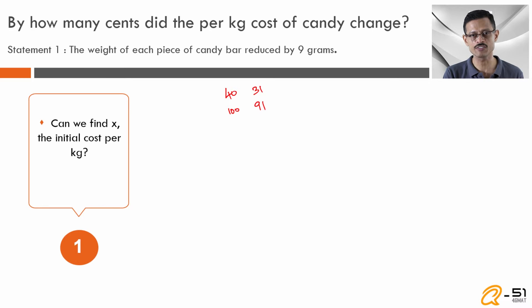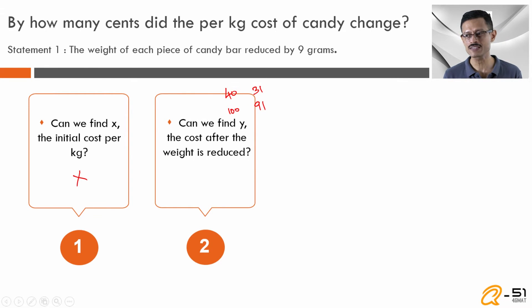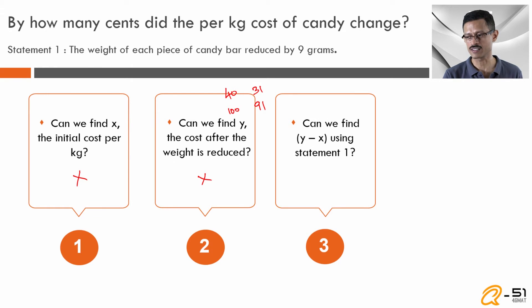But do we have the initial cost per kilogram of the candy, the x? No, that information is not available either in the question stem or through the statement. So we do not know x. Do we know the new price? We know that the weight of each candy has come down by 9 grams, but because we do not know the initial price, there is no way we can compute what the new price is going to be. So we do not know what y is either. If we do not know x and we do not know y, obviously we will not be able to find out what is the value of y minus x. So statement 1 is obviously not sufficient.